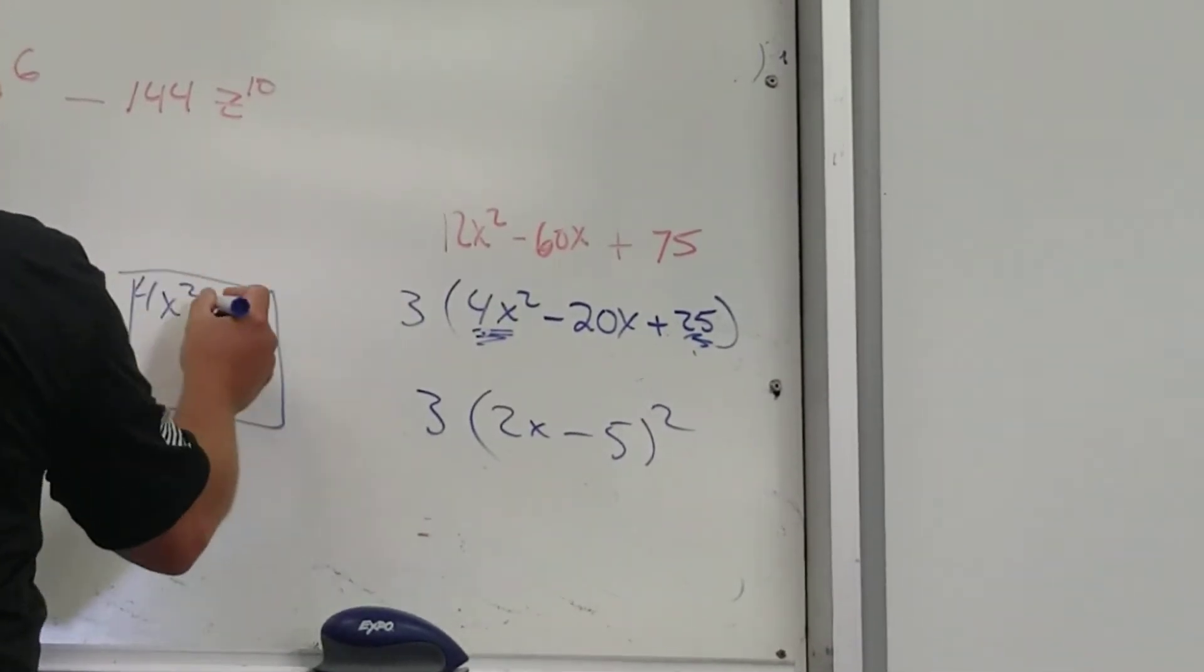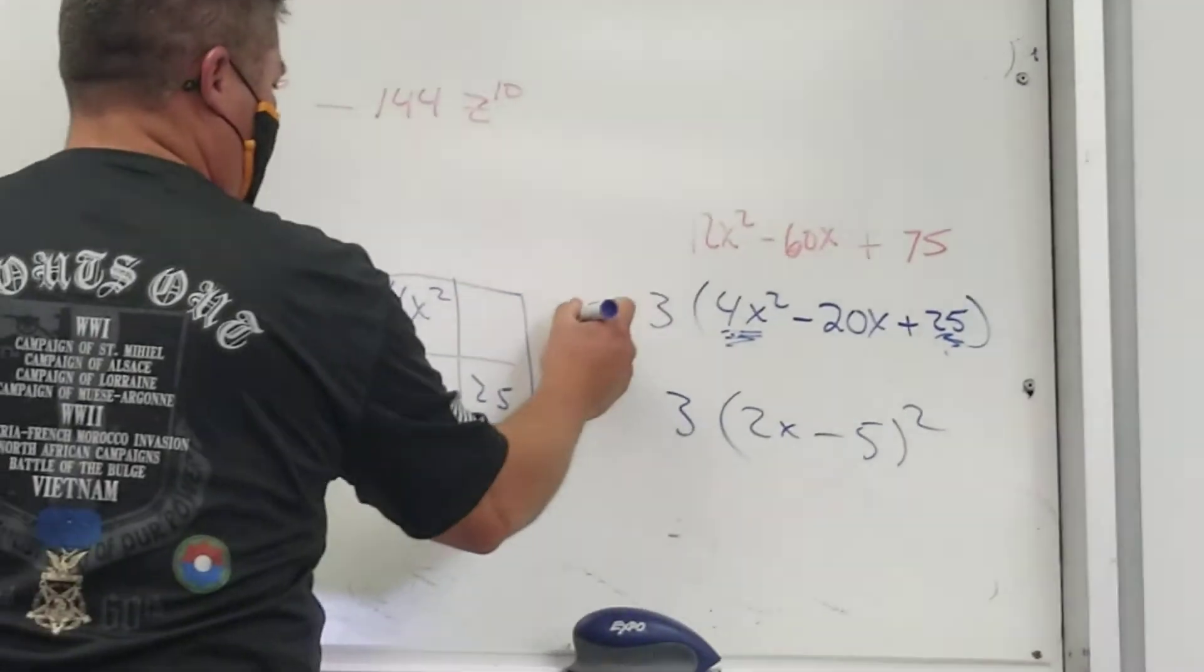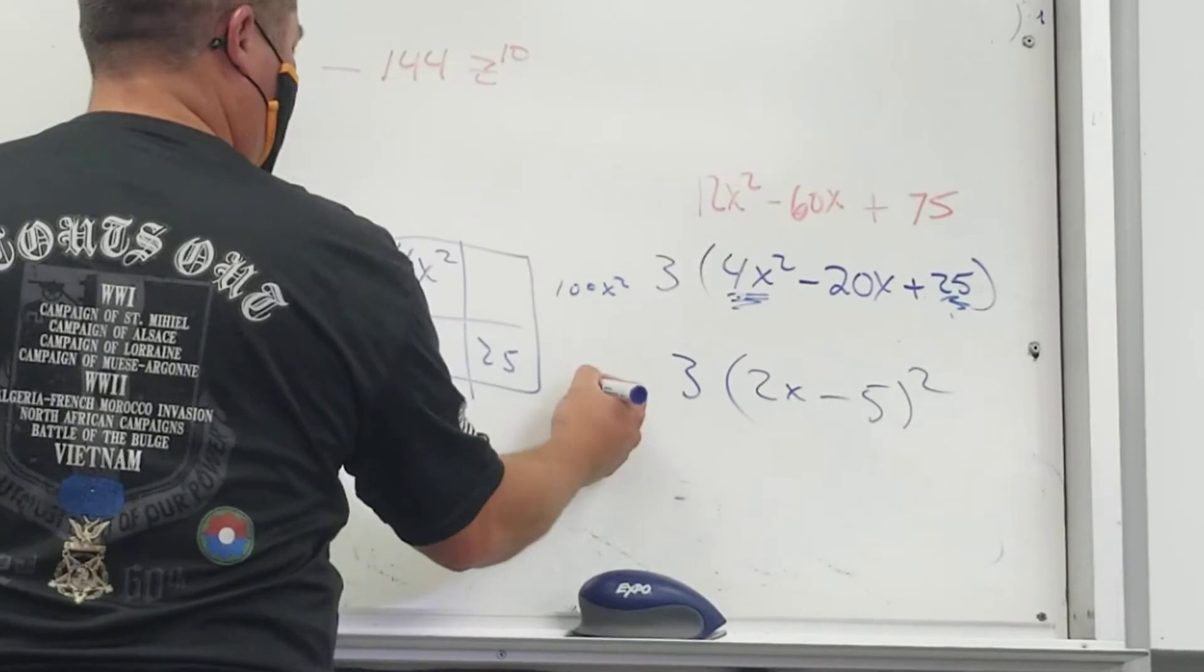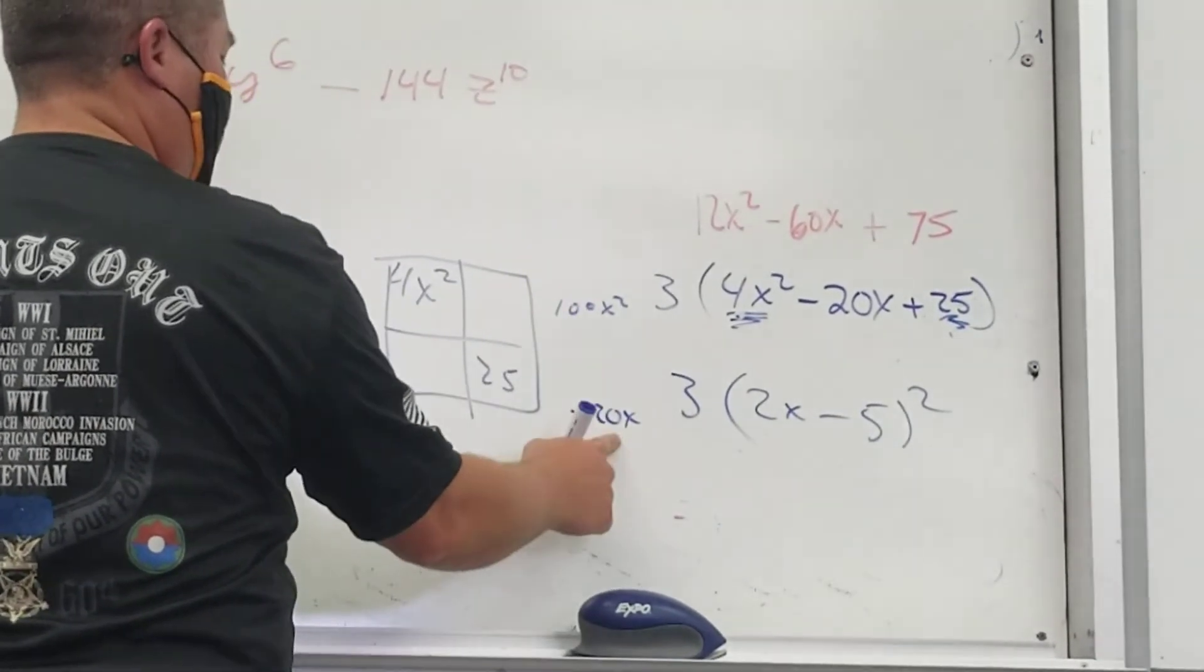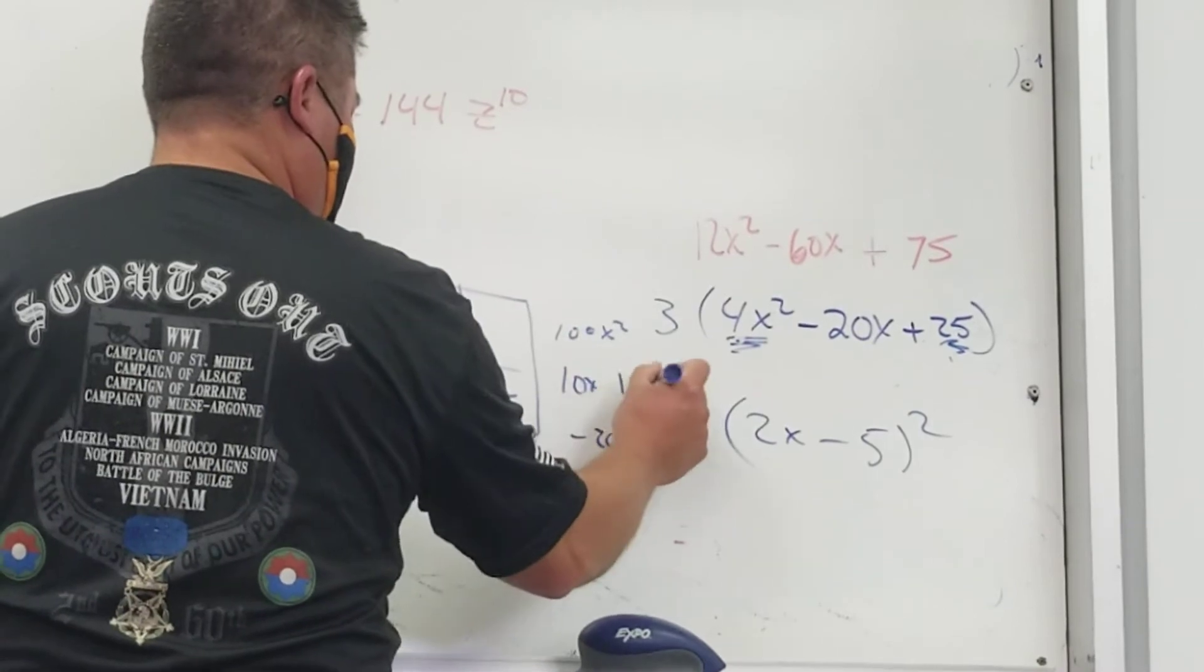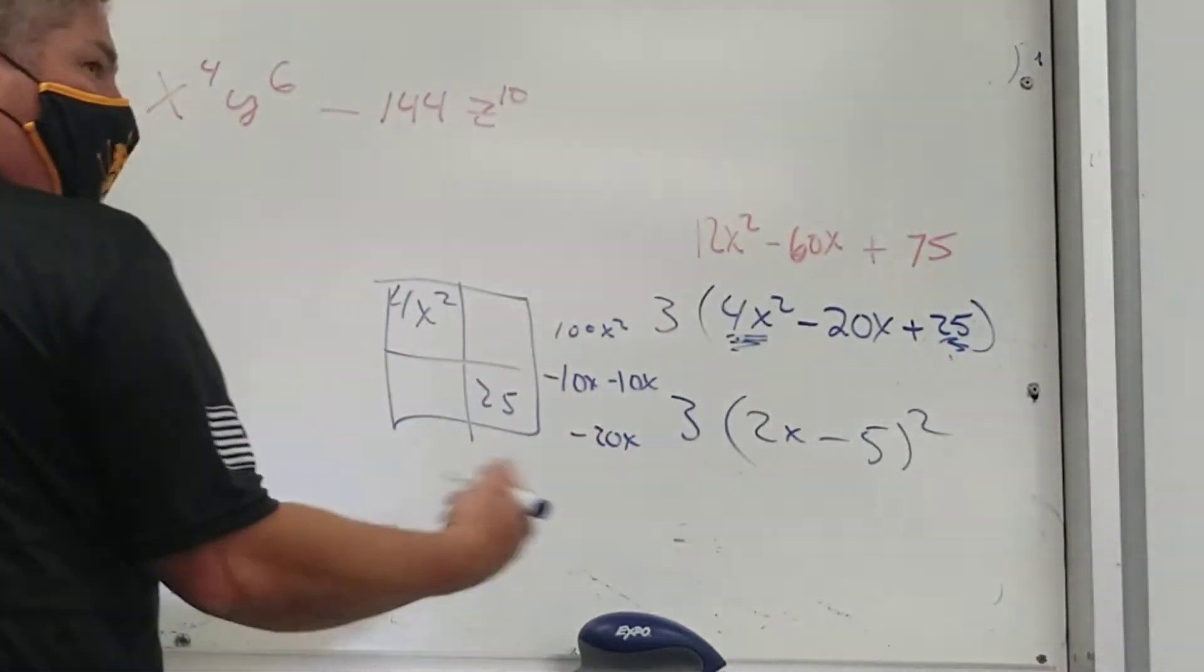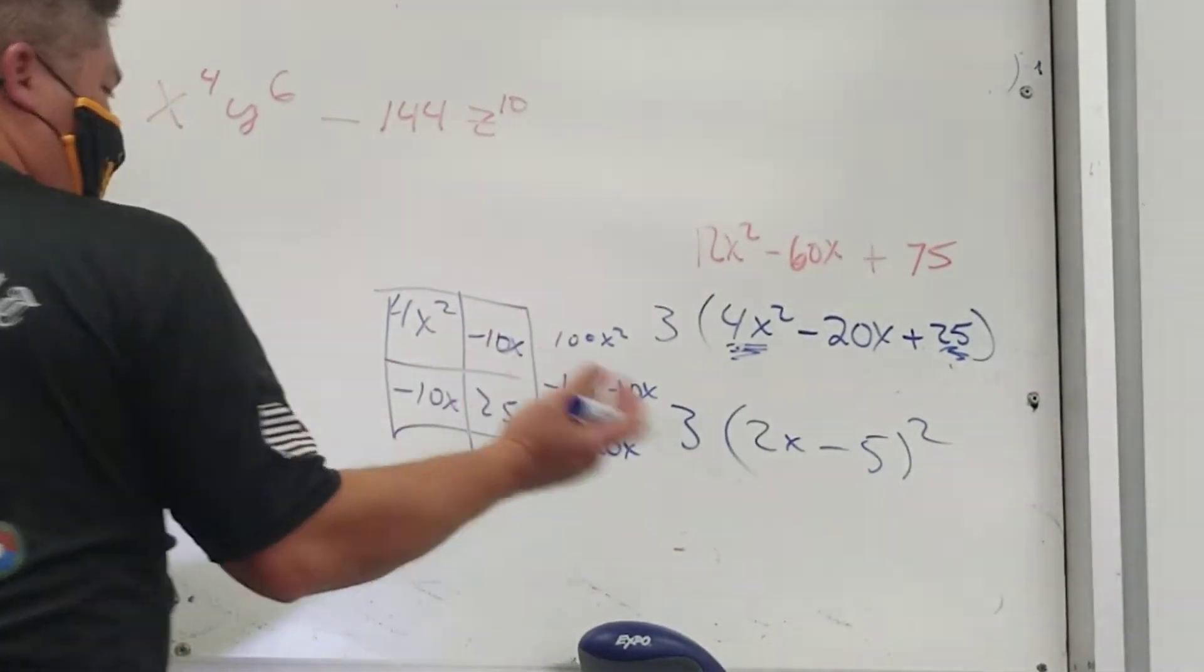So if I did box method on this and I put a 4 times 25 is 100x squared. And then I'd say, hey, I want it to be a negative 20x when I'm done. So it has to multiply to be 100, that would be 20, times to 100, add to be 20. 10 and what? 10 and 10, x and x. They're both negative, so that it'll be, add to be a negative 20. So negative 10x, negative 10x, box method, right?